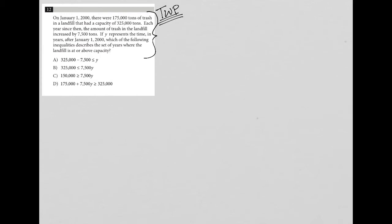So let's start reading. It says on January 1st, 2000, there were 175,000 tons of trash. I'm gonna write that down. 1/1/2000 equals 175,000 tons trash in a landfill that had a capacity of 325,000 tons. I'm gonna write that down. Capacity equals 325,000 tons, right? Trash.